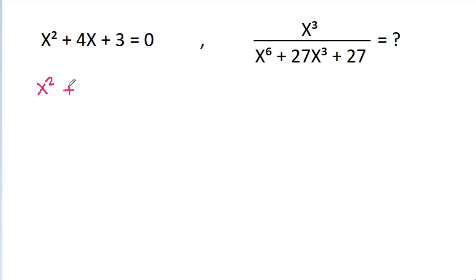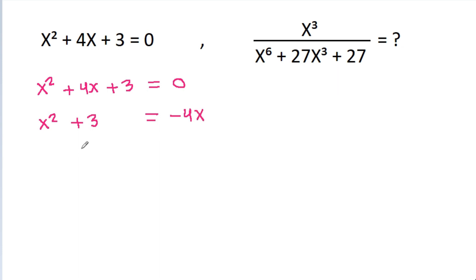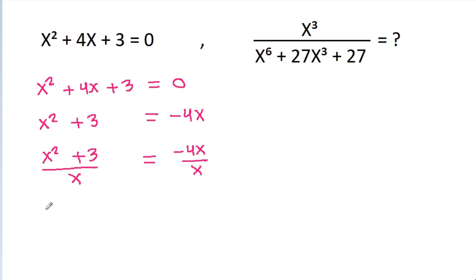We have x² - 4x - 3 = 0, which gives x² - 3 = 4x. If we divide both sides by x, then (x² - 3)/x = -4, so x - 3/x = -4.